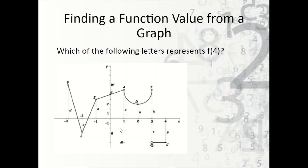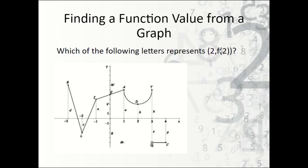Finding a function value from a graph: which letter represents f of 4? We go to where x is 4, and f of 4 is represented by the dotted line P. So P represents f of 4. If it asks for the actual solution, that would be C. Now, if it gives us the value — say f of 2 — we select the actual point on the graph, which in this case is D. If you see just f of 2 by itself, it refers to the value on the dotted line, which would have been B.